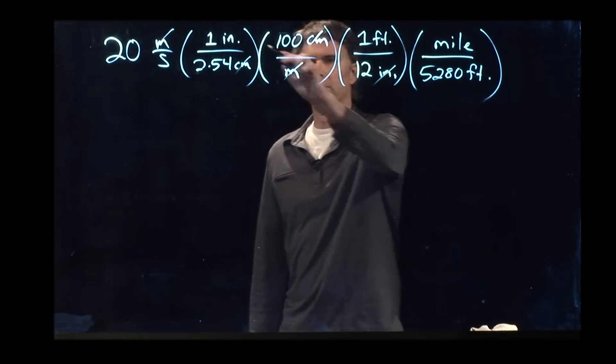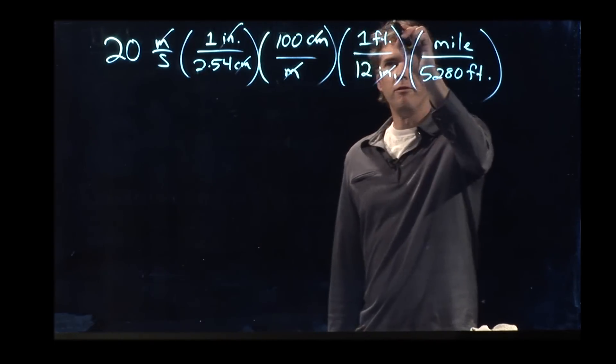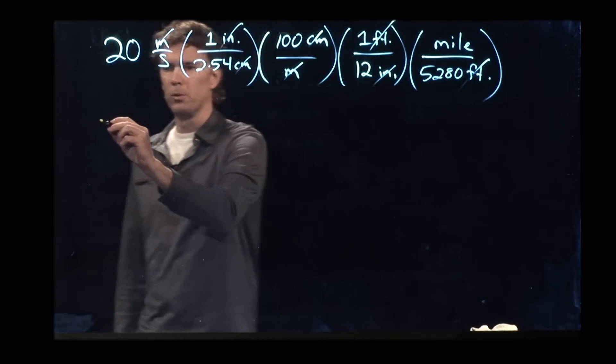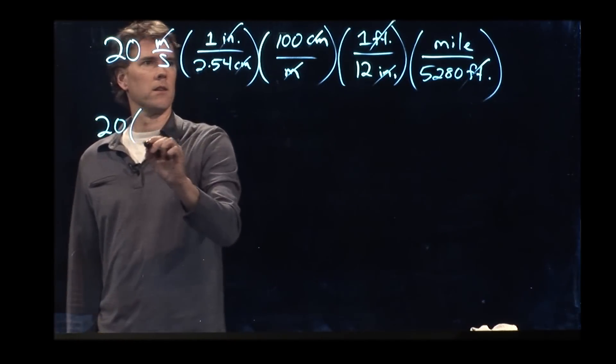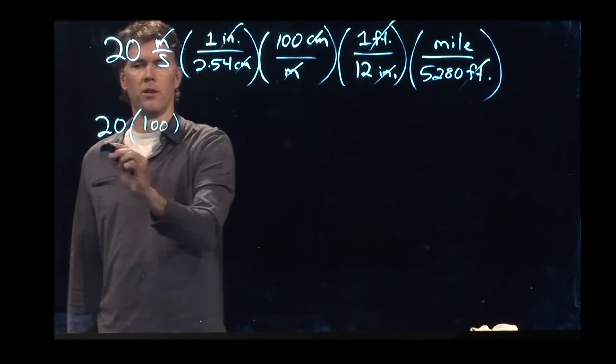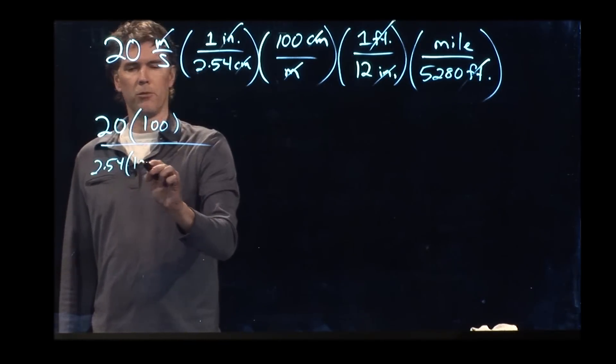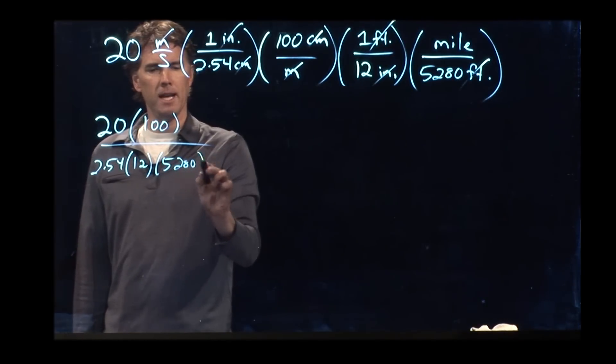So inches crosses out with inches, feet crosses out with feet, and we're left with miles. So we've got 20 times 100 divided by 2.54 times 12 times 5280.